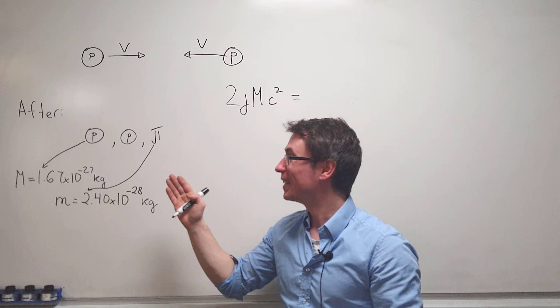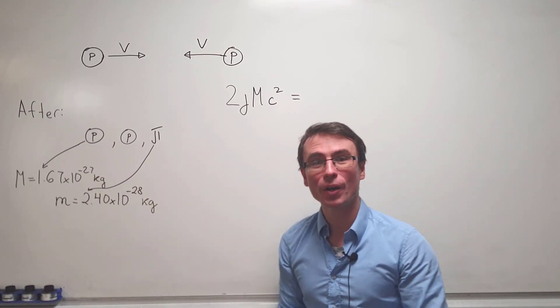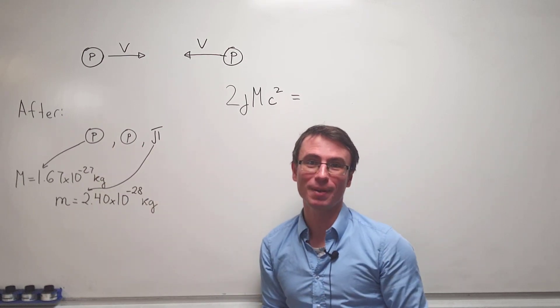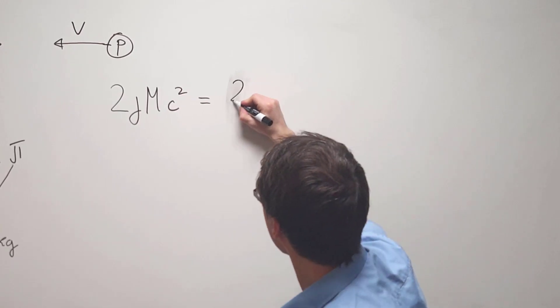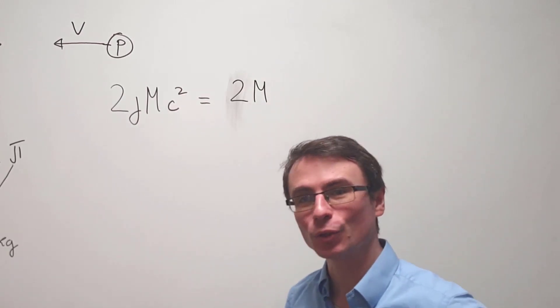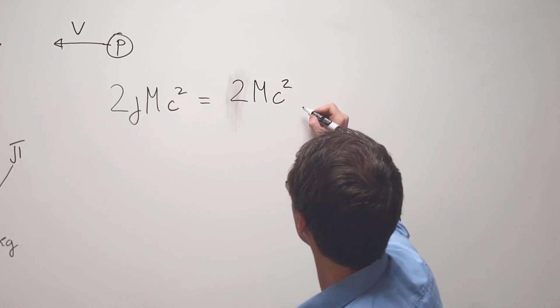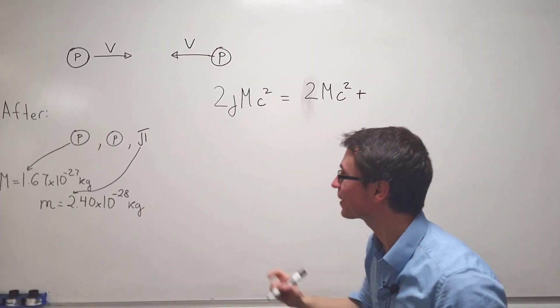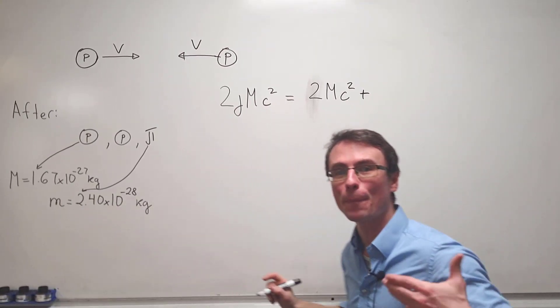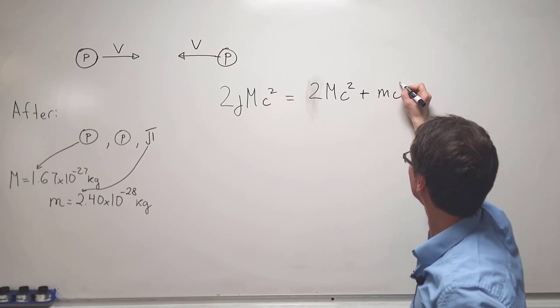That is, twice the mass of a proton at rest multiplied by c squared, plus the mass of an individual pion multiplied by c squared. We can solve this equation directly for the gamma factor, so let's do some cancellations.